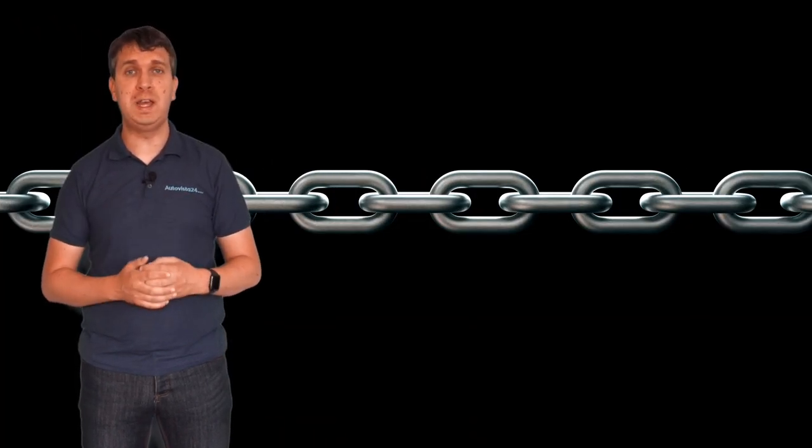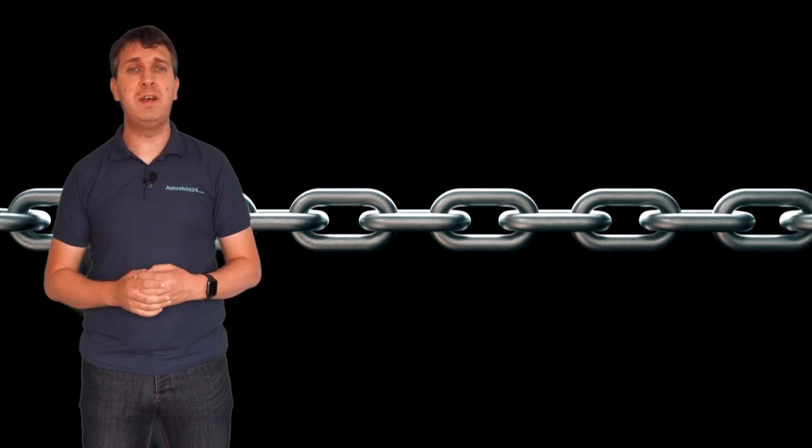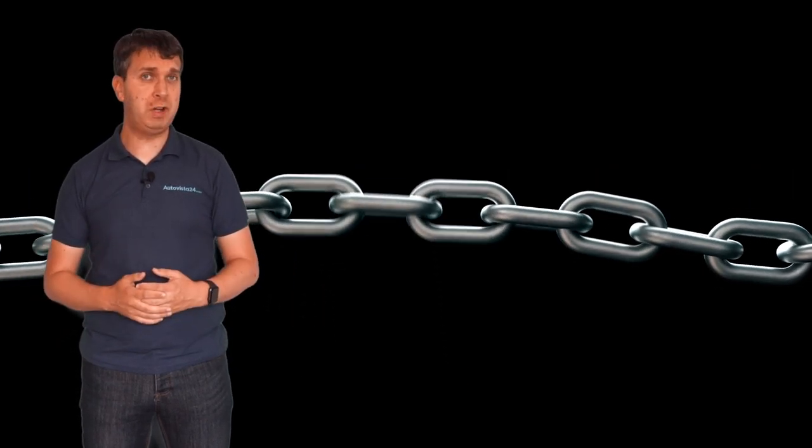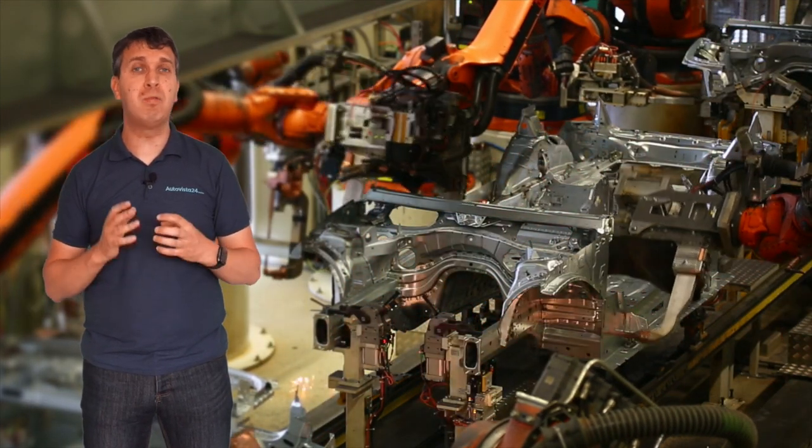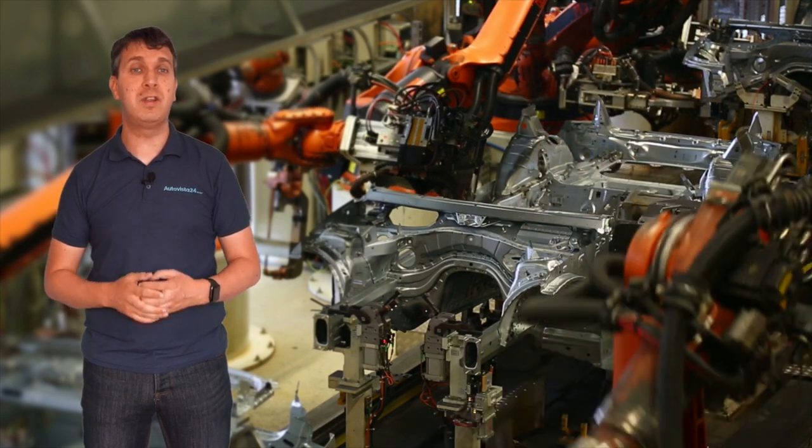However, like a chain there are multitudes of links, and should one of these links fail it can make the entire chain fragile, causing it to break. The automotive supply chain is therefore crucial for car makers, ensuring they get the right parts at the right time to deliver their cars to customers.